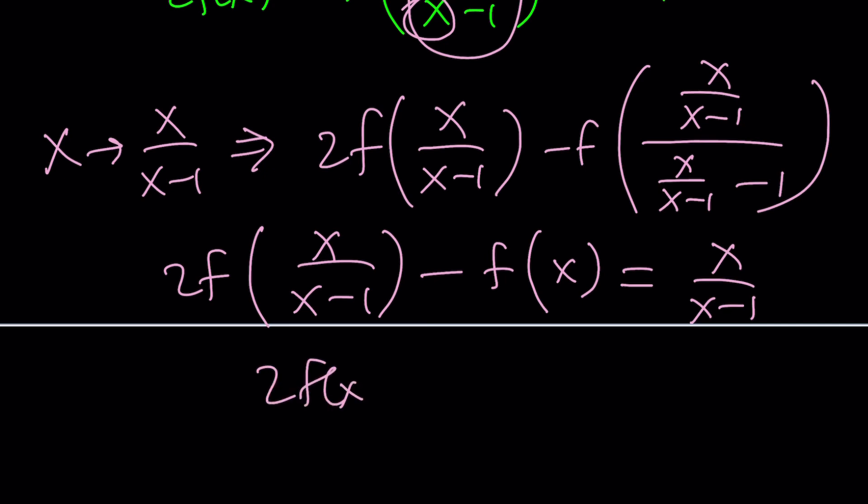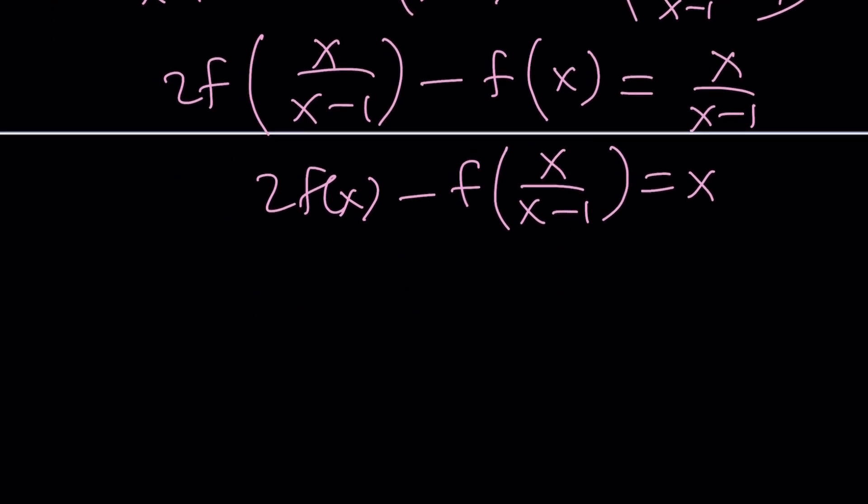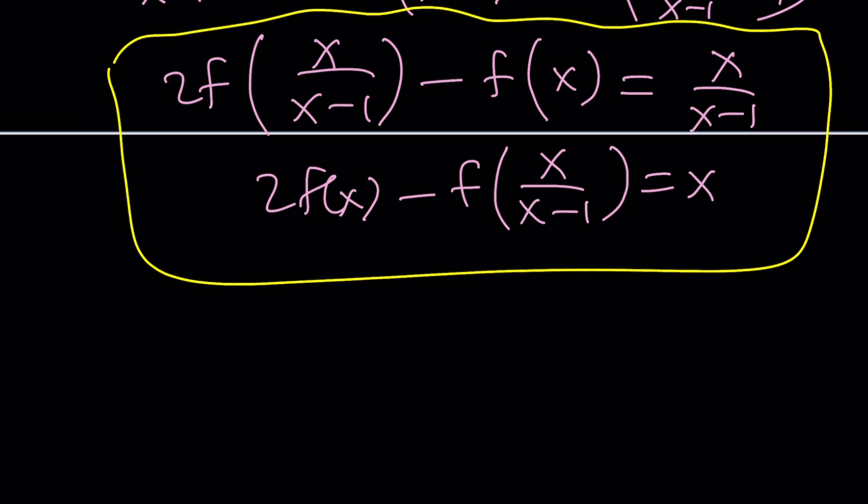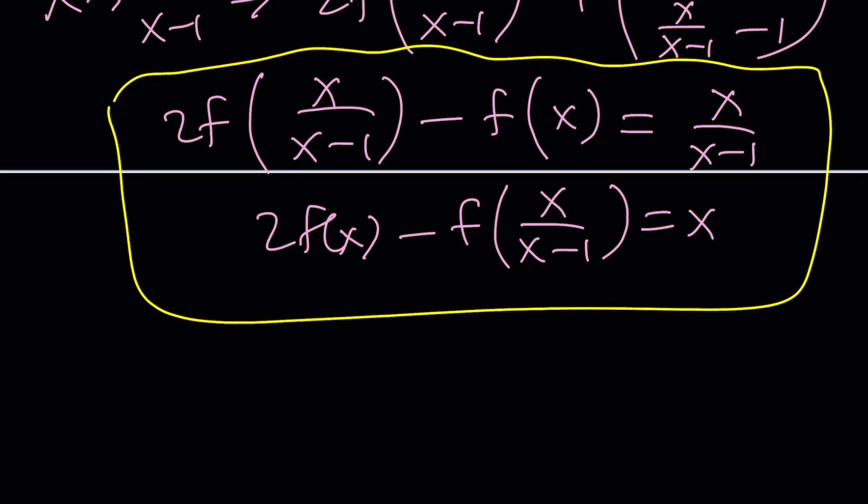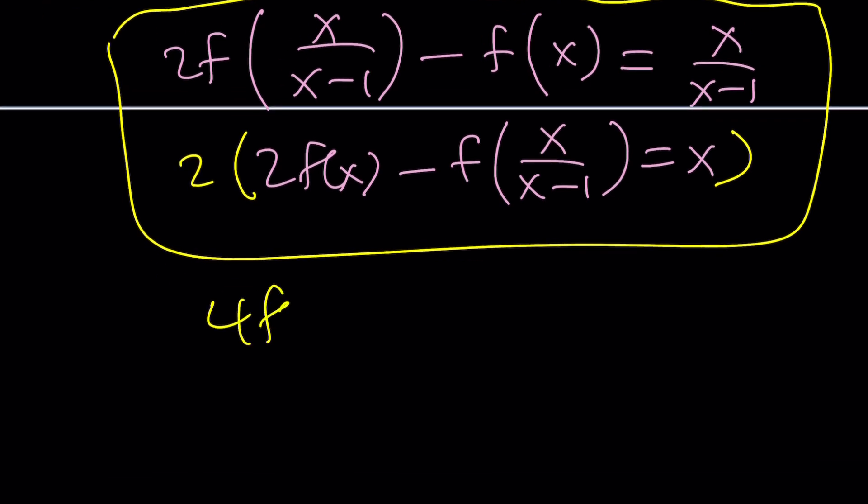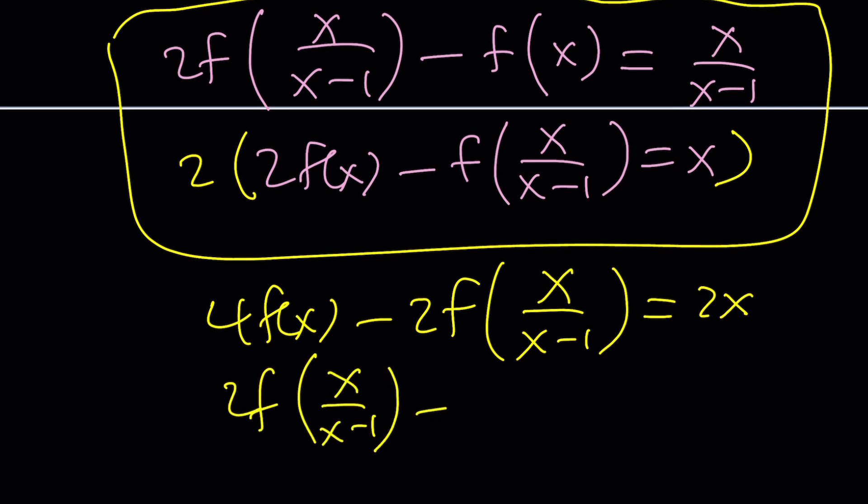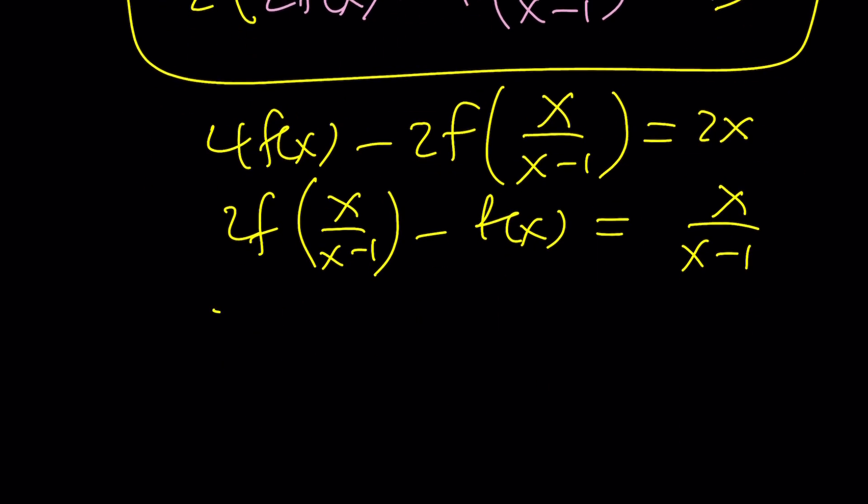Now along with the other equation if you put these two together what's going to happen we'll get a system which is very easy to solve actually. If you focus on this right here, all you have to do is eliminate one of these variables and of course I'd like to eliminate this so let's multiply the bottom equation by 2 that gives us 4f of x minus 2 times f of x over x minus 1 equals 2x and then just copy the first equation.